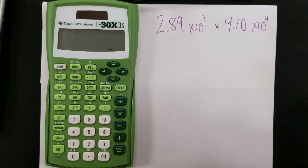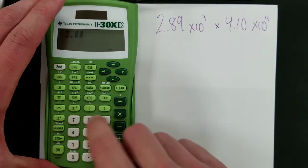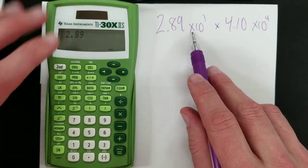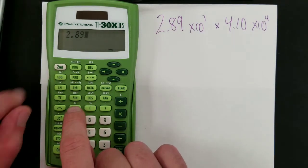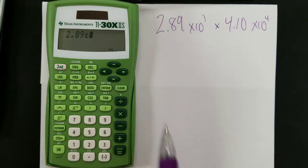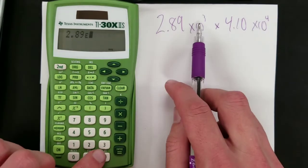Now if you want to enter this into the calculator, first thing you have to do is start with 2.89, and then the way you enter this times 10 to the third power is not by typing it in the way you'd think, but using this EE function right here, which is enter exponent. And since it's the second function, enter it like that. 2.89 times 10 to the power of 3.